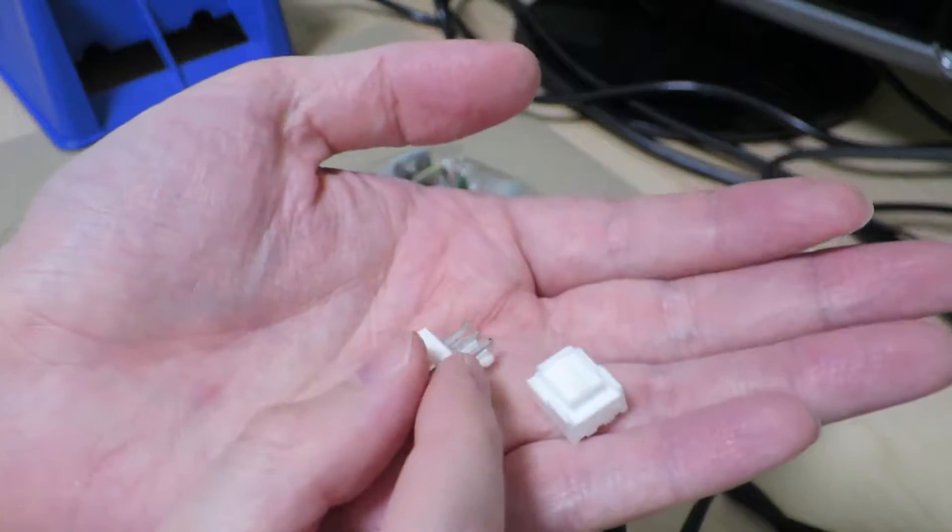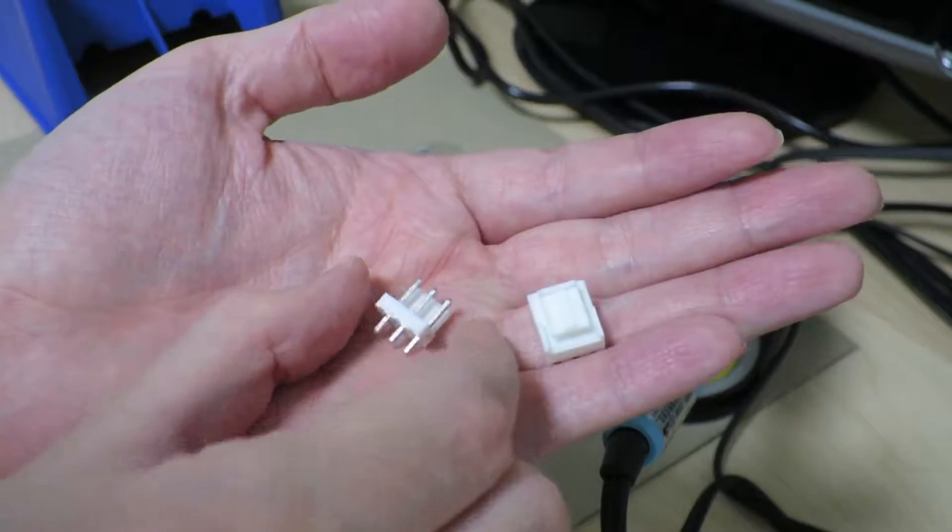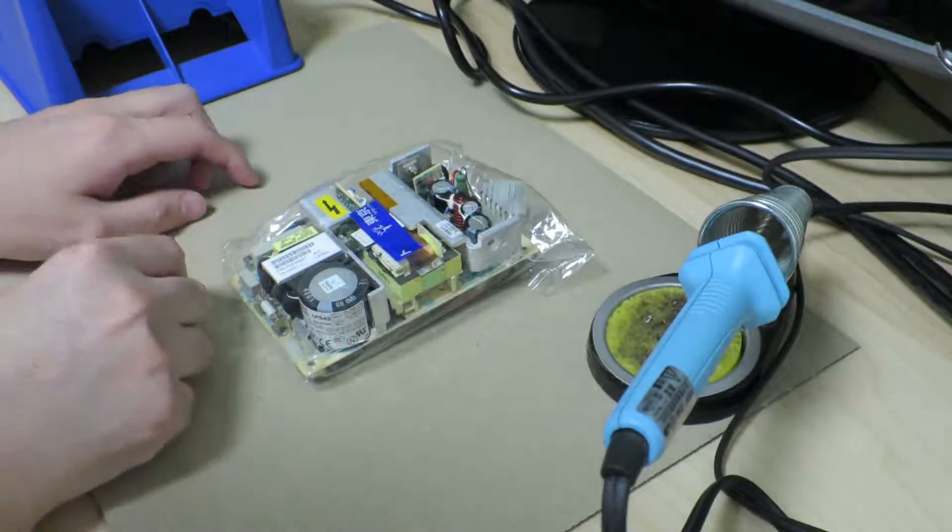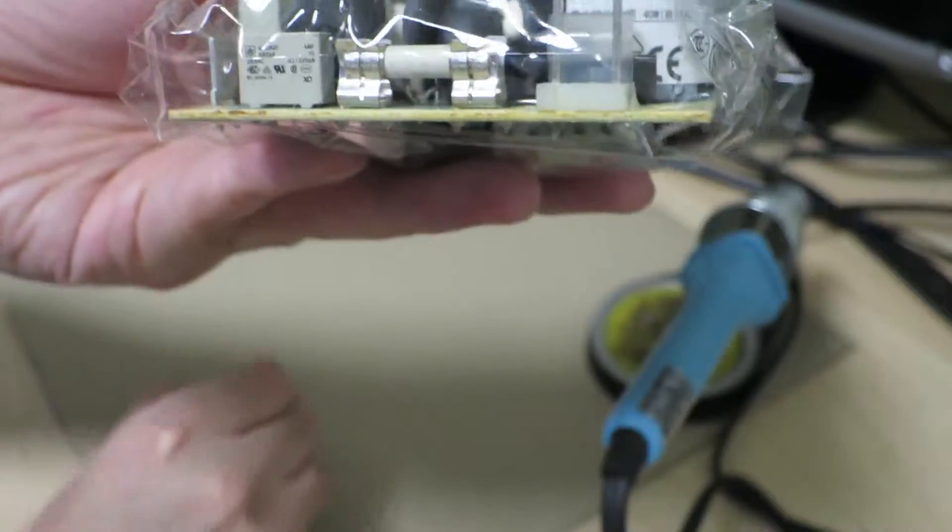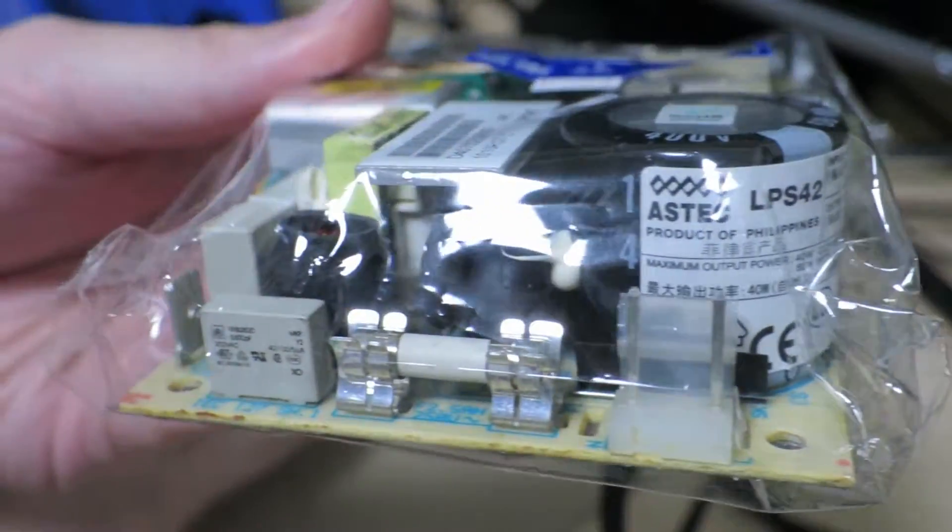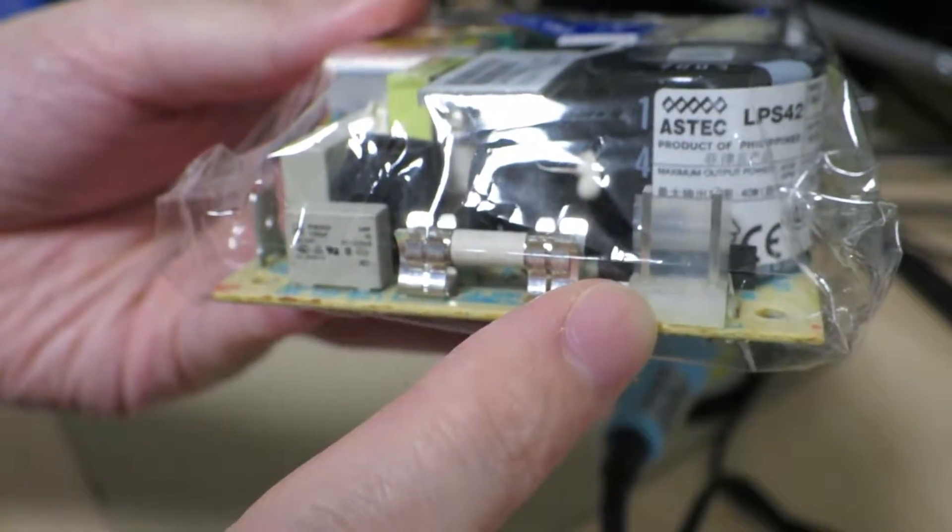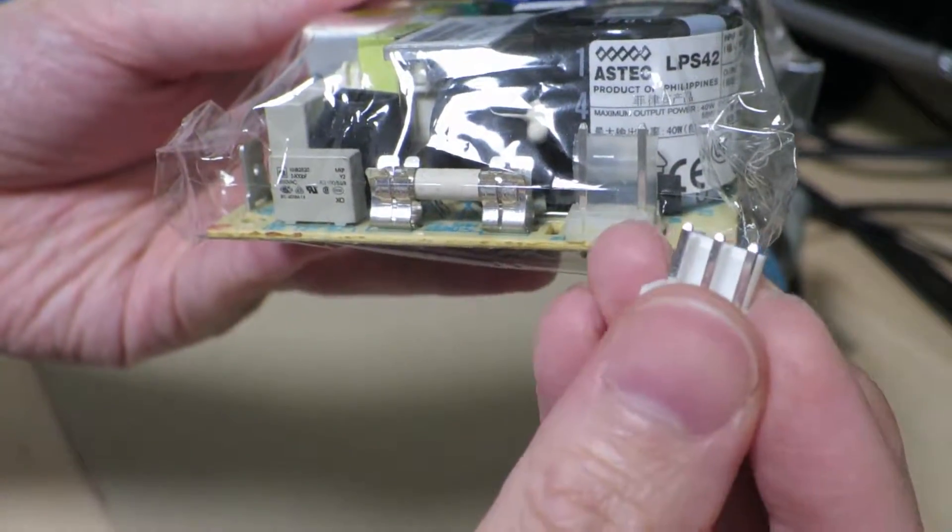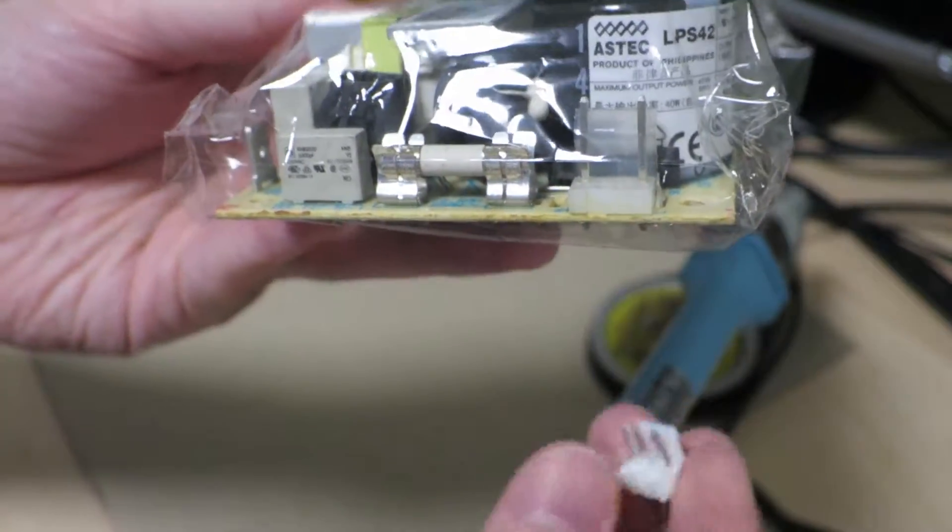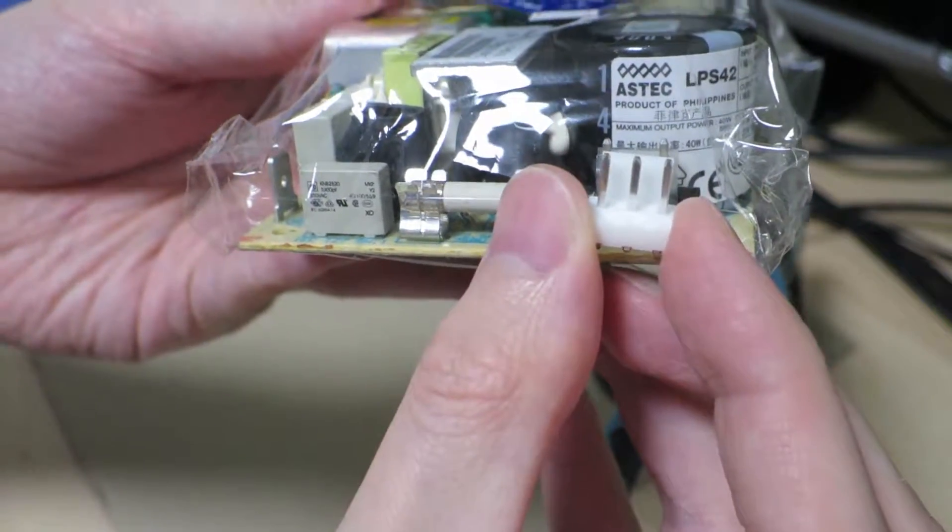So these are JST VH terminals, I believe. So I'm gonna try to see if I can replace this terminal with one of these JST VH terminals. It turns out that this Molex terminal, the pin pitch between the pins is 3.96 millimeters. It just turns out that the JST VH terminals have the exact same pin pitch. So I should be able to take this out and put this in instead.